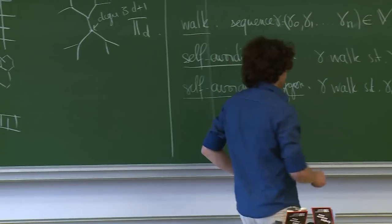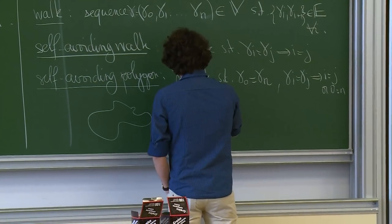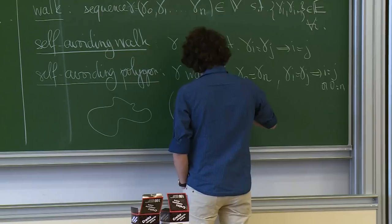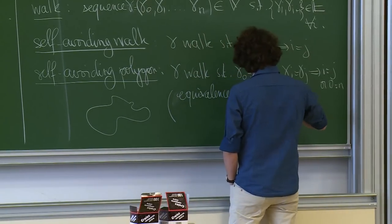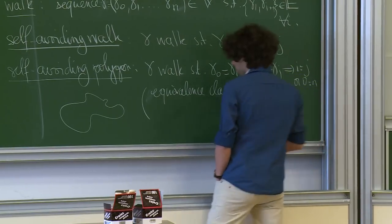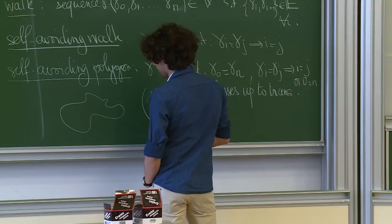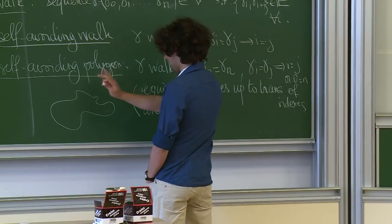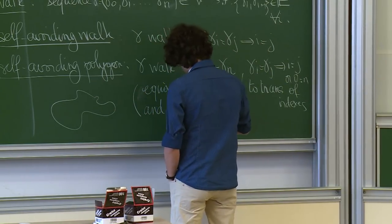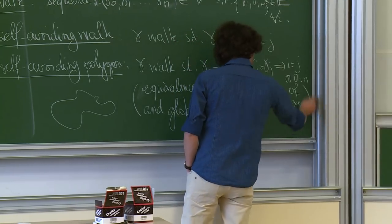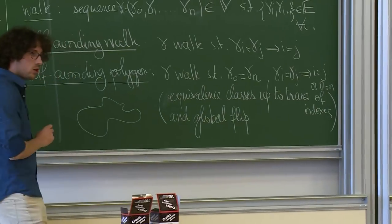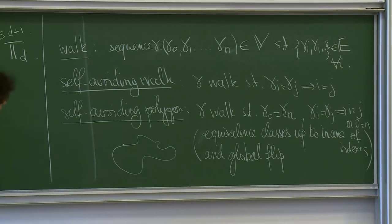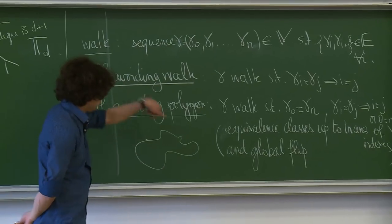For polygons, I'll look at these walks up to rerouting and reorientation — equivalence classes up to translation and reordering, meaning a global flip. So I don't want to specify what the origin γ_0 is, and I don't want to specify in which direction the polygon is traversed.